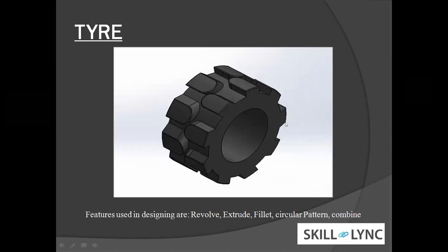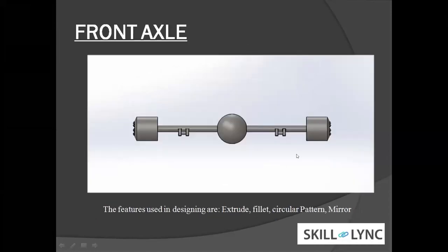This is the main tire, which supports the forklift and the heavy load. It is a tubeless tire — tubeless tires are commonly used in forklifts and are also rugged. The features used in design are revolve, extrude, fillet, circular pattern, and mirror. This is the front axle. The forklift is a front-wheel drive, so the differential is on the front axle. Features include extrude, fillet, circular pattern, and mirror.